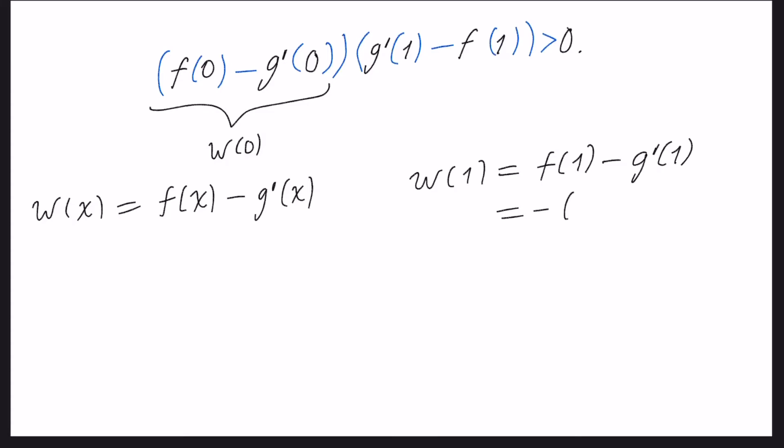As you can see, w(1) is equal to f(1) minus the derivative of g evaluated in 1, or the same as minus the derivative of g evaluated in 1 minus f(1). So this equation, I will call equation 1, can be written in the following form: w(0) multiplied by minus w(1), this is bigger than 0.